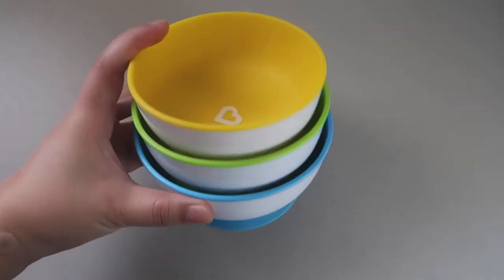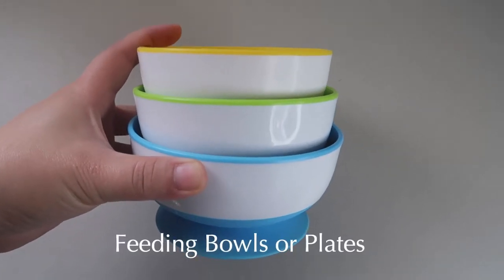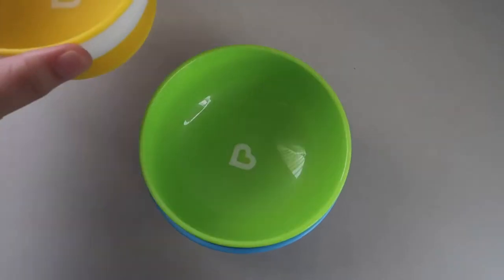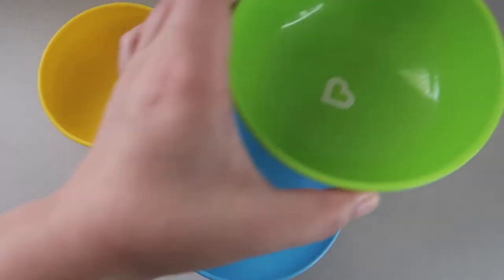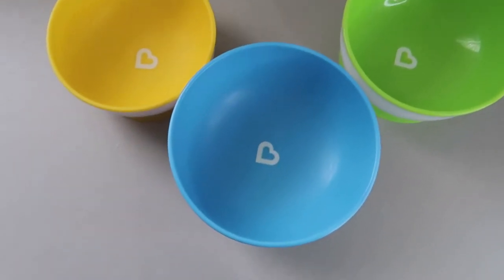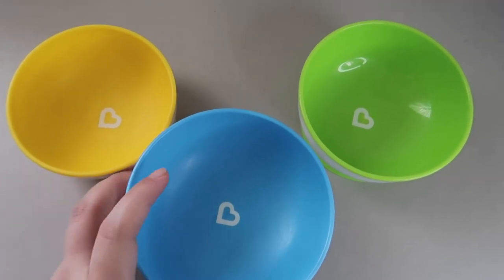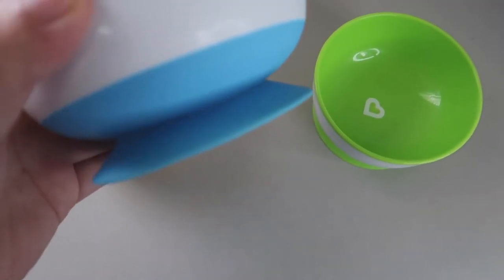So the first on my list are these feeding bowls from Munchkin. It comes in a set of three and what I like about this one is it comes in different sizes and at the same time in different colors. Meron din siyang suction sa ilalim.